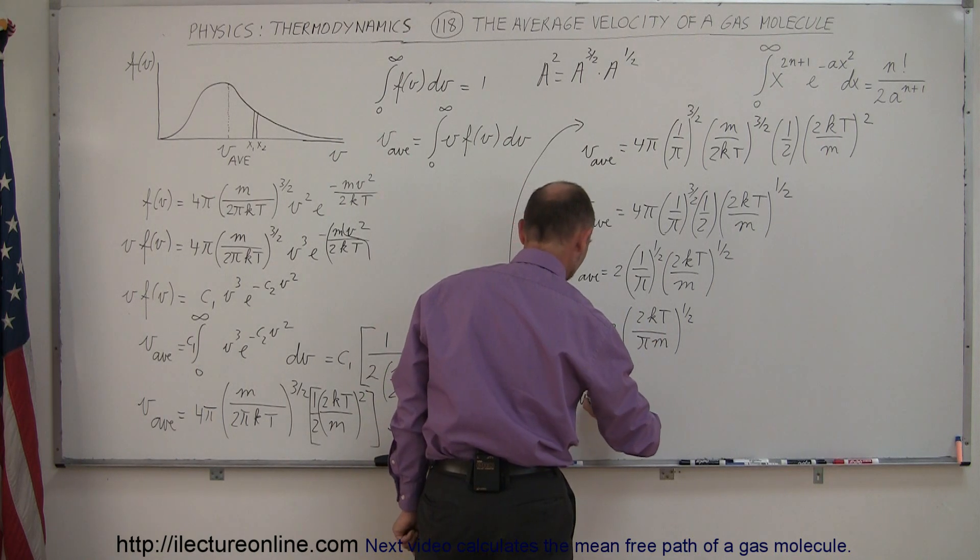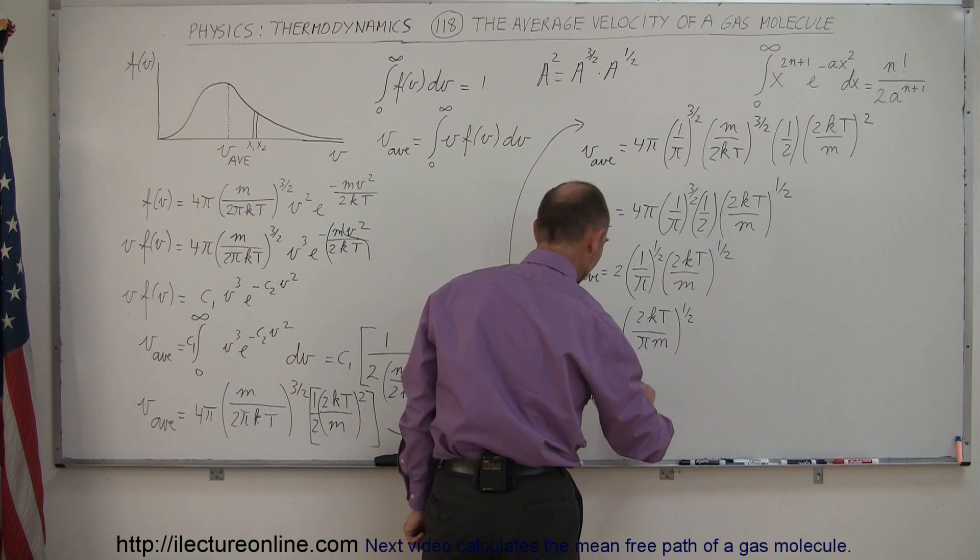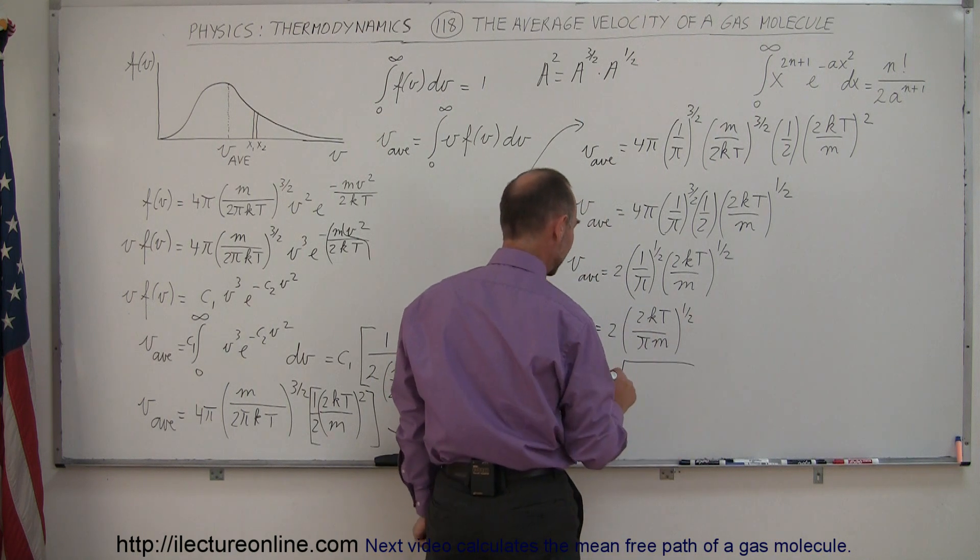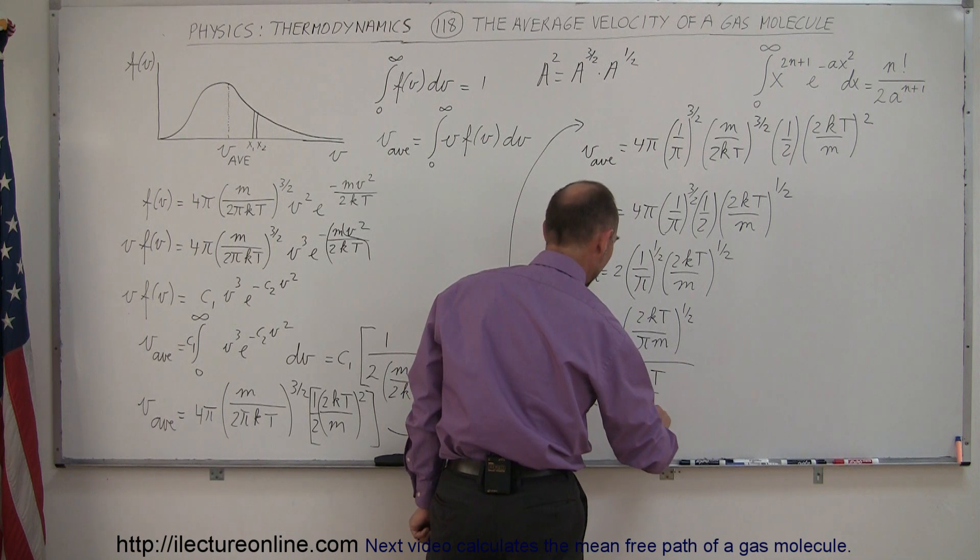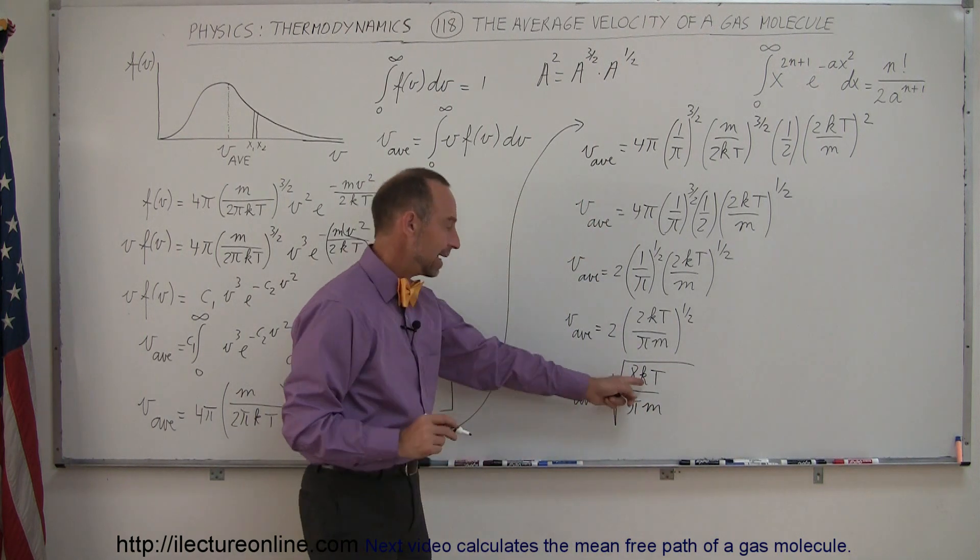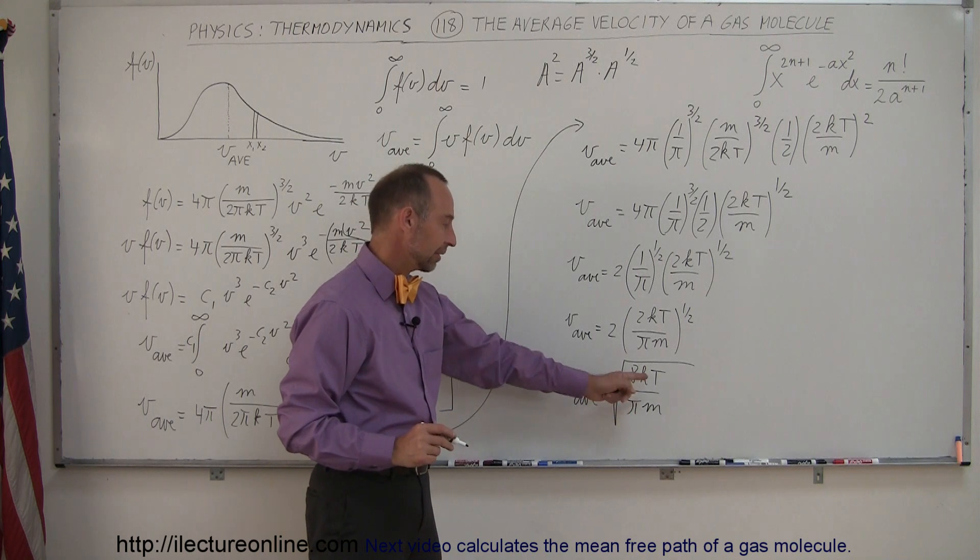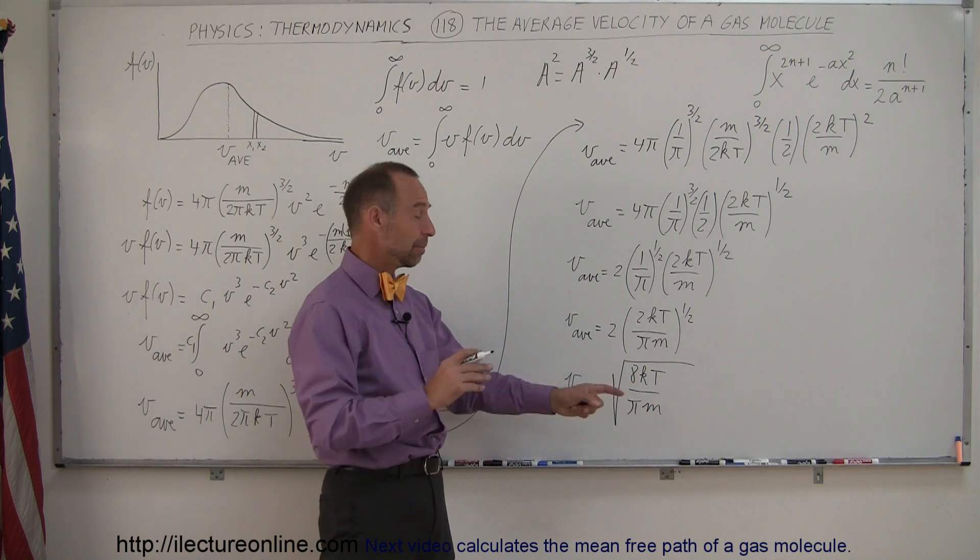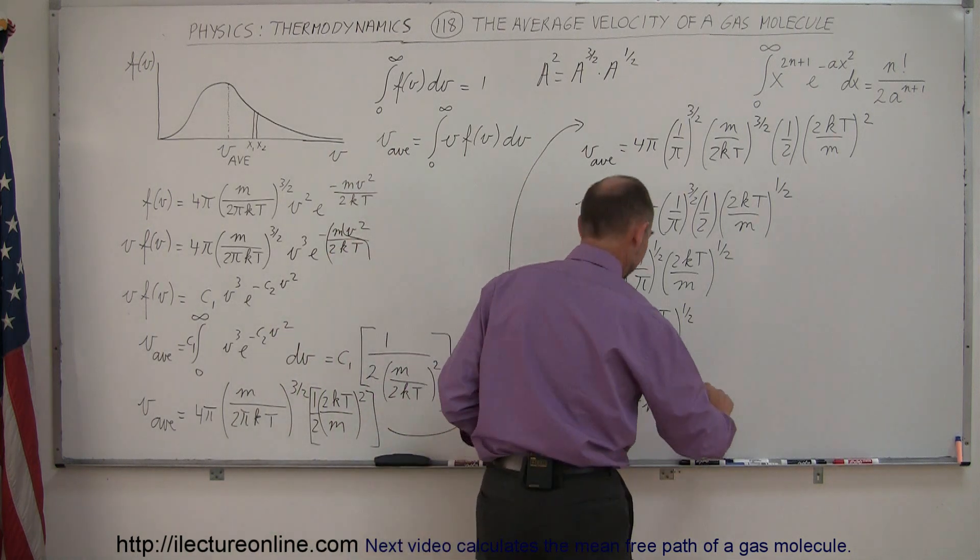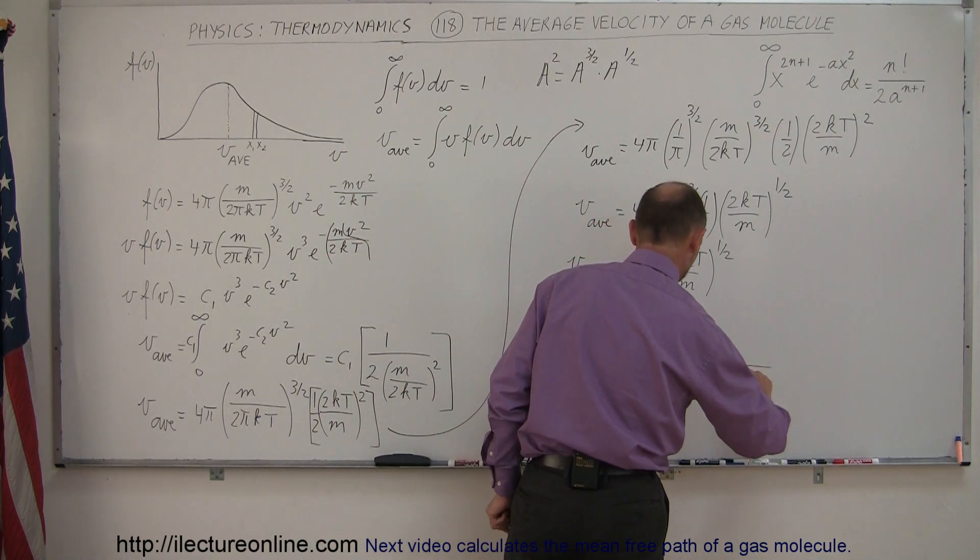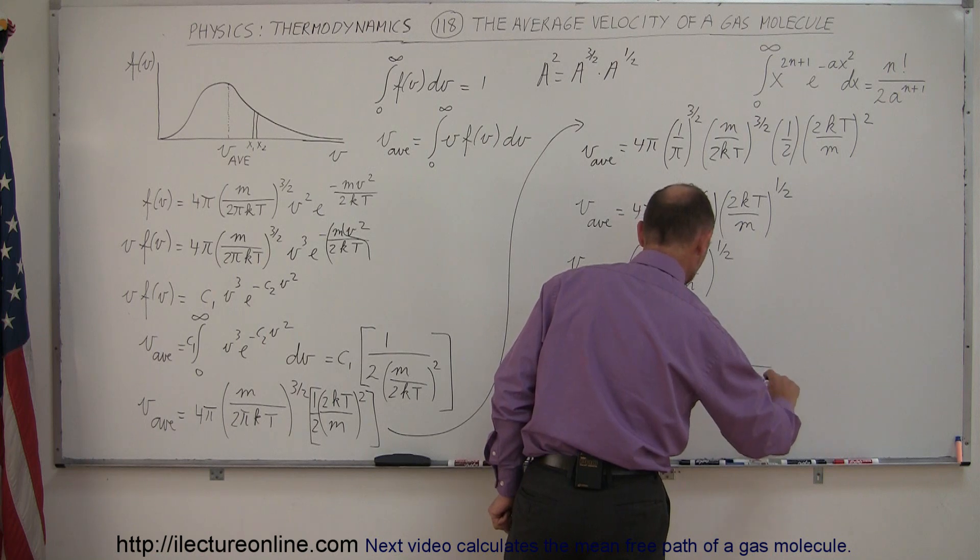So I have V average is equal to, and I'll use the square root symbol now instead of 1 half power, that would become square root of 8KT over πM. And of course, K is the gas constant divided by Avogadro's number, M is the molecular mass, not the molar mass, so I can also write this as the square root of 8RT over π times the molar mass.